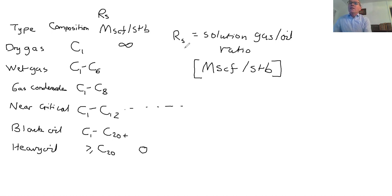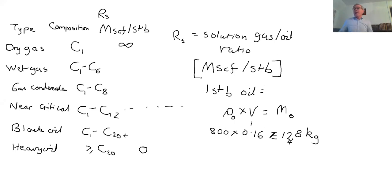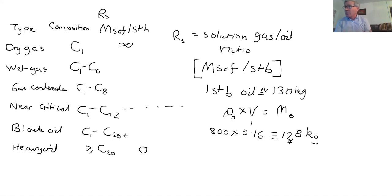Let's imagine we have one stock tank barrel of oil — that's about 160 liters, or 0.16 cubic meters. The density of oil is about 800 to 900 kg/m³. So mass equals density times volume, which gives roughly 800 × 0.16 = about 130 kilograms. So a stock tank barrel of oil is approximately 130 kilograms.